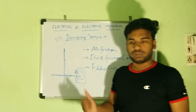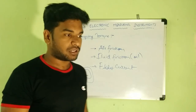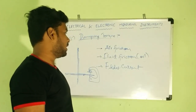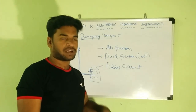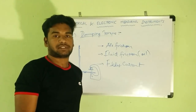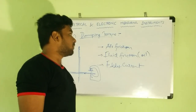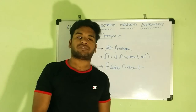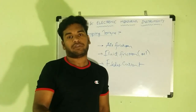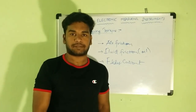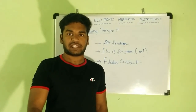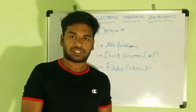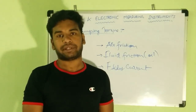In the order of effectiveness, the best damping technique is eddy current at number one, then air friction, then fluid friction. Eddy current damping is used in permanent magnet moving coil instruments, which is PMMC. Air friction is usually applied for other types such as moving iron instruments. With this, we have completed the essentials required for the working of electrical engineering instruments. In the next class, we will be dealing with basic electrical engineering instruments and their different types.